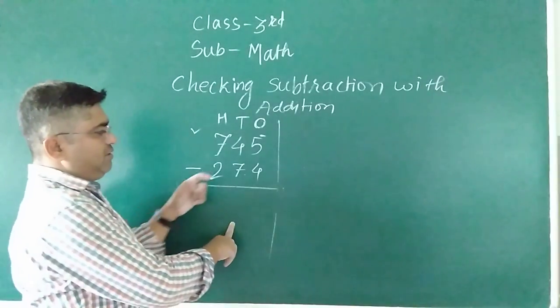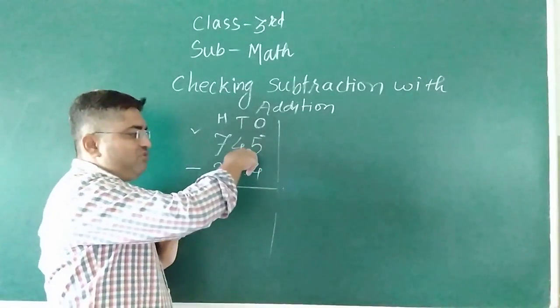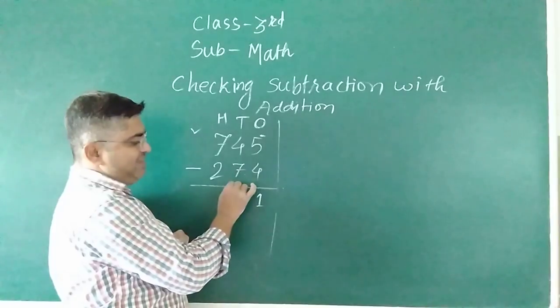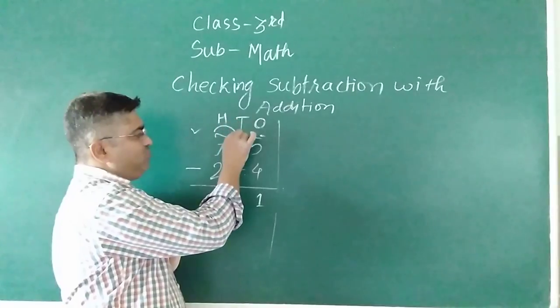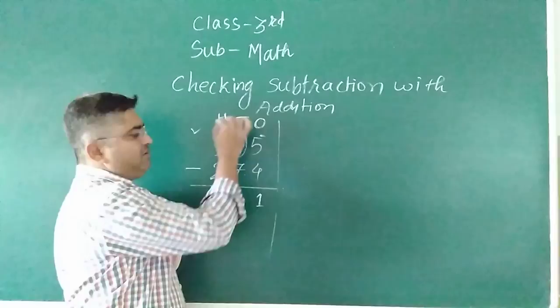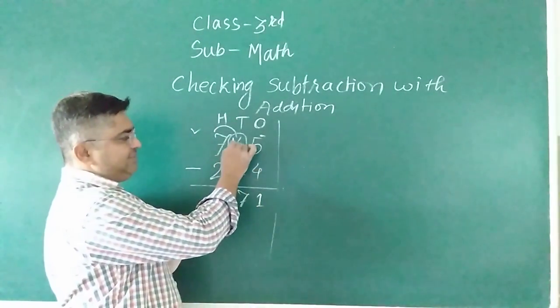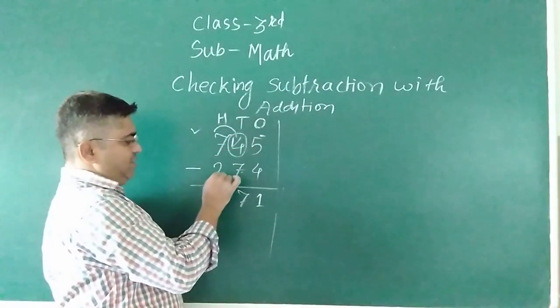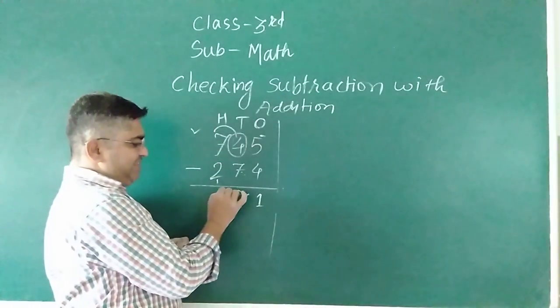5 minus 4 is 1. 4 minus 7 is not possible, so what will we do? Regrouping, taking borrow from that. So it will be 14. 14 minus 7 is 7. We've taken that so we're returning it. 7 minus 3 is 4.